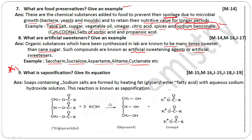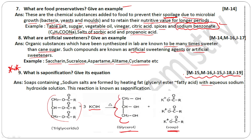What is saponification? Give its equation. Soap containing sodium salts is formed by heating fat with aqueous sodium hydroxide solution. Fat contains long chain fatty acids. When heated with alkali, long chain fatty acid plus alkali forms soap plus glycerol. This reaction produces soap and glycerol.